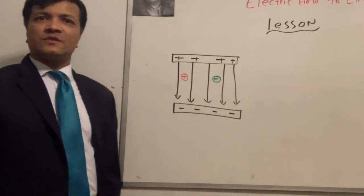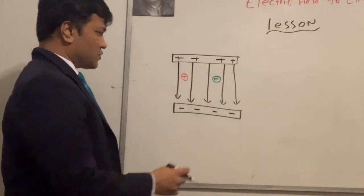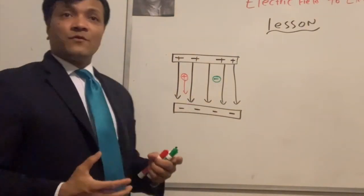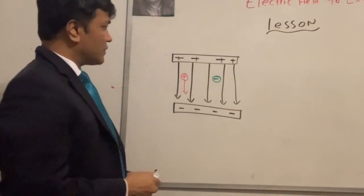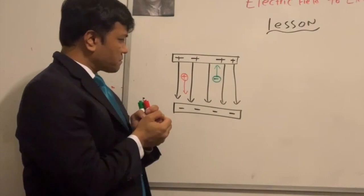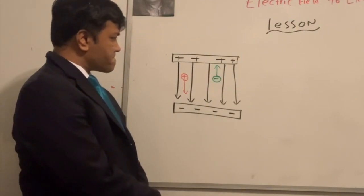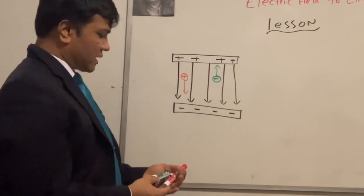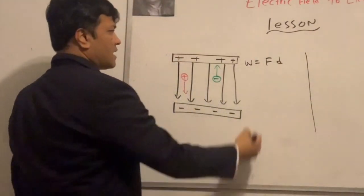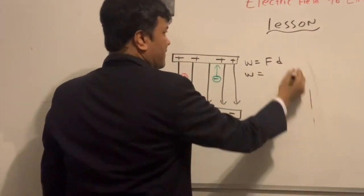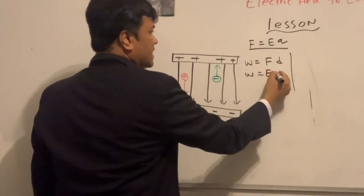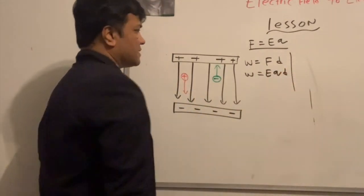The force on the positive charge is in the direction of the field. The force on the negative charge is opposite to the field direction — very nice. Now let's understand work. The work equation is W = Fd, and since F = Eq, we get W = eqd.